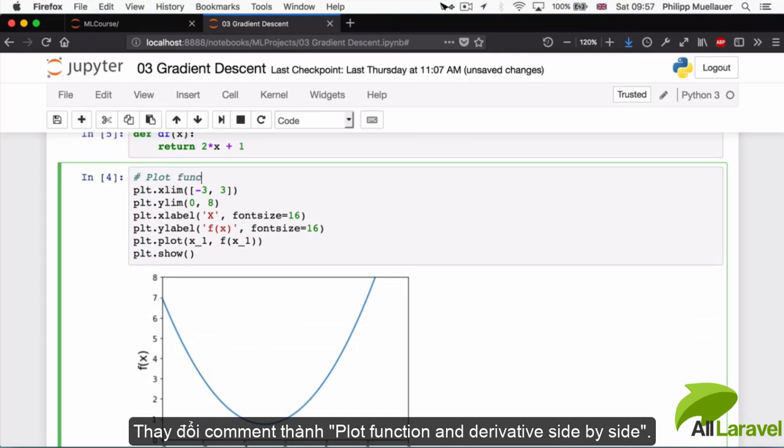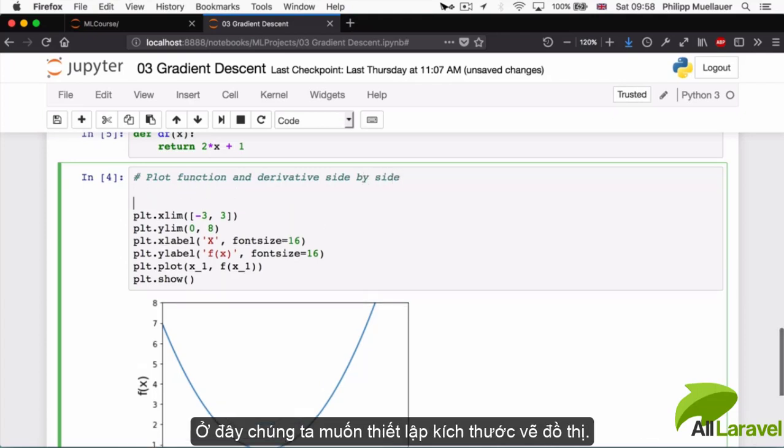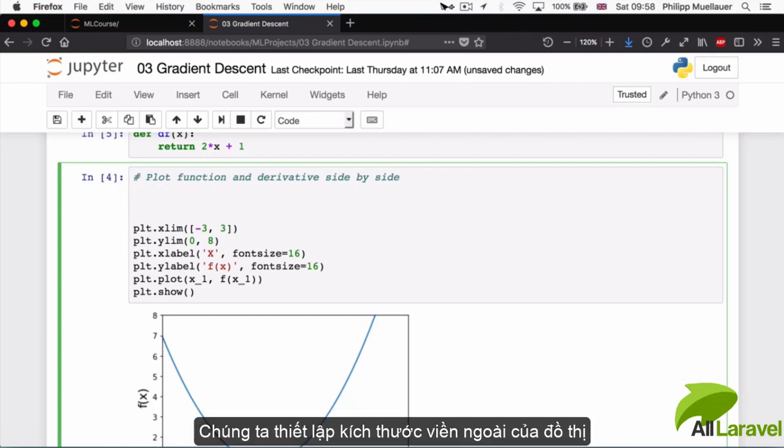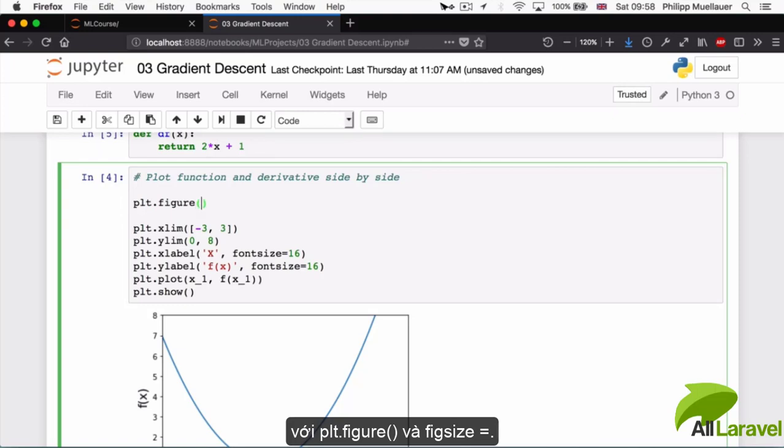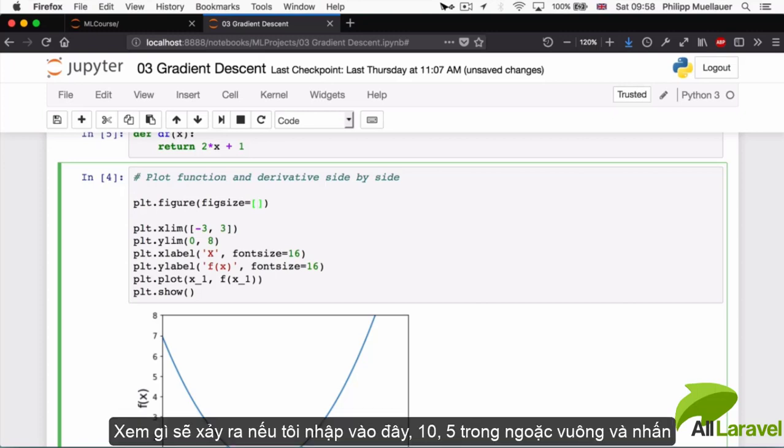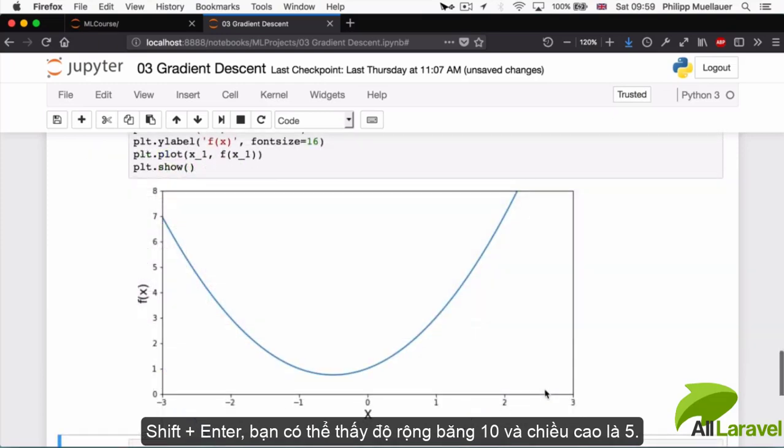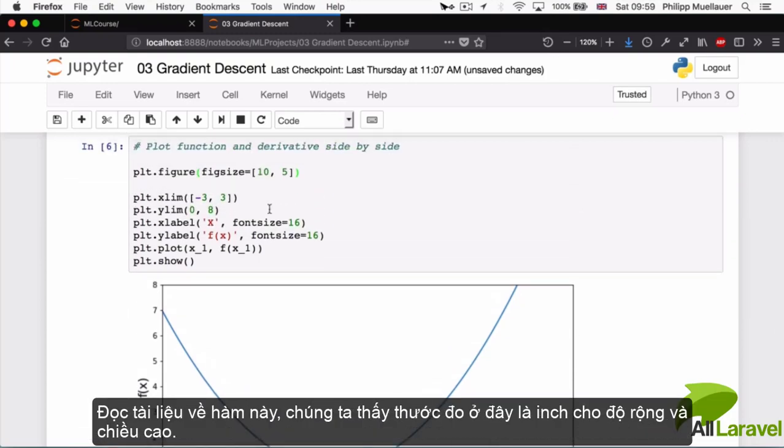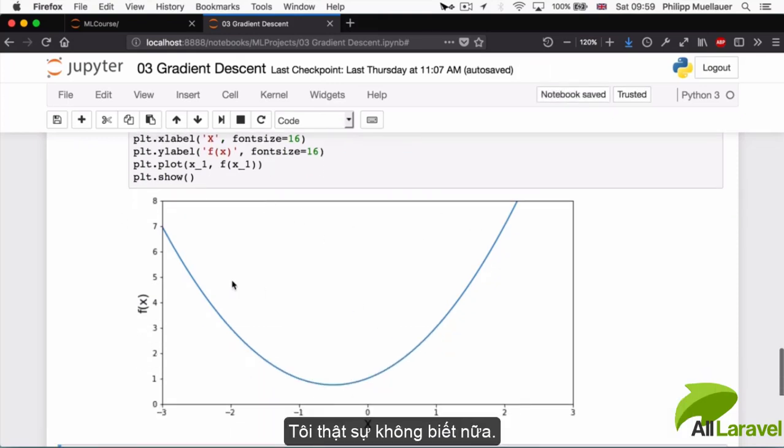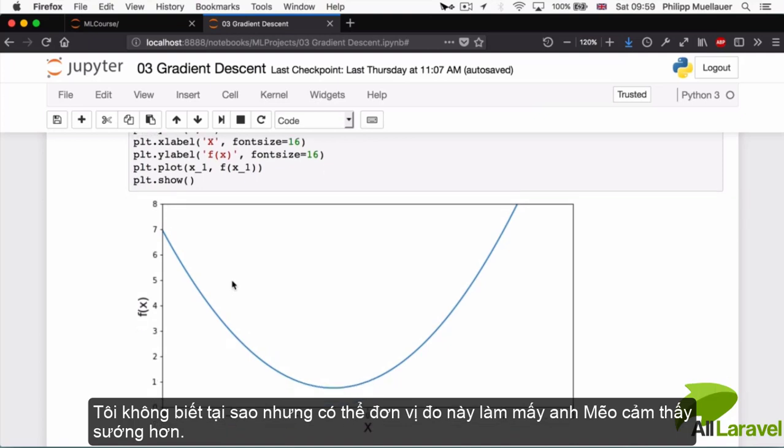So I can reuse some of this code that we've got here. I'm going to change my comment here. I'm going to say plot function and derivative side by side. So this is what we're going to do here. And in order to size our plot, in order to size it, we're going to have to set the figure size of our plot. So we're going to write plt.figure, parentheses, and then we're going to say figsize is equal to, and then we have to give it a width and a height. So let's see what happens if I put in 10 comma 5 in the square brackets and hit shift enter. So you can see now that the width is 10 and the height is 5. I looked at the documentation for this, and this is actually measured in inches of all things. I don't really know why that is, but I hope it makes our American friends happy.